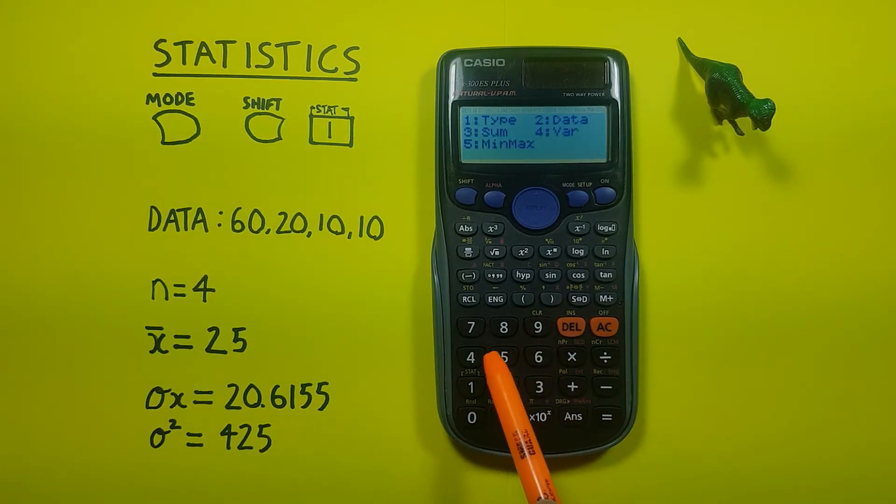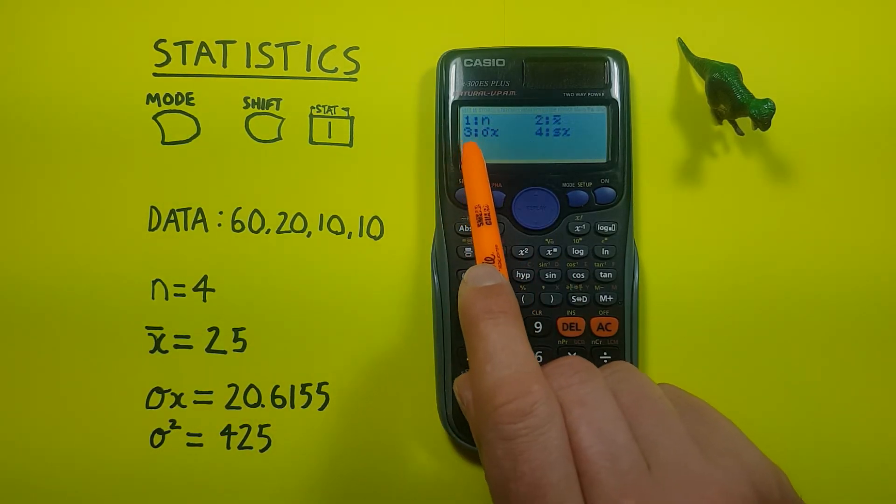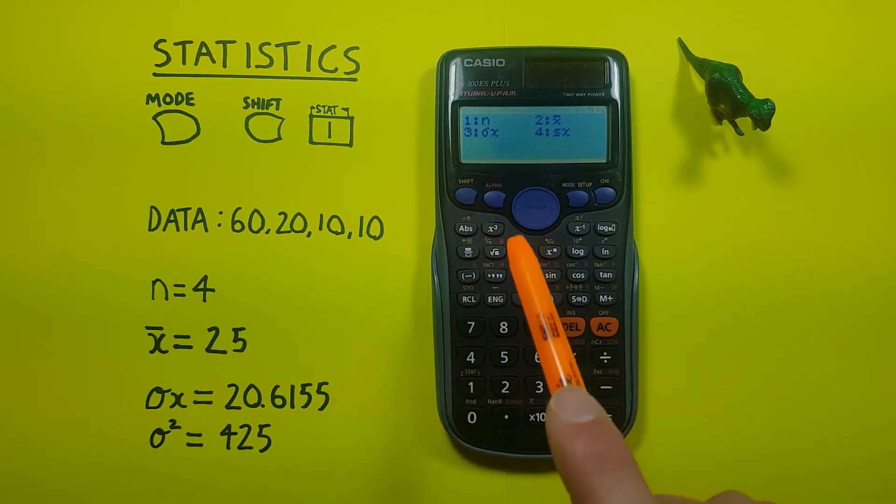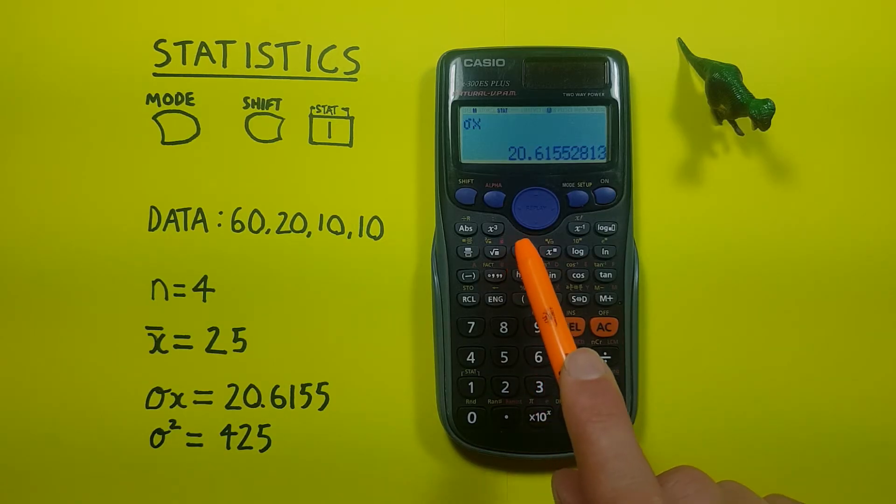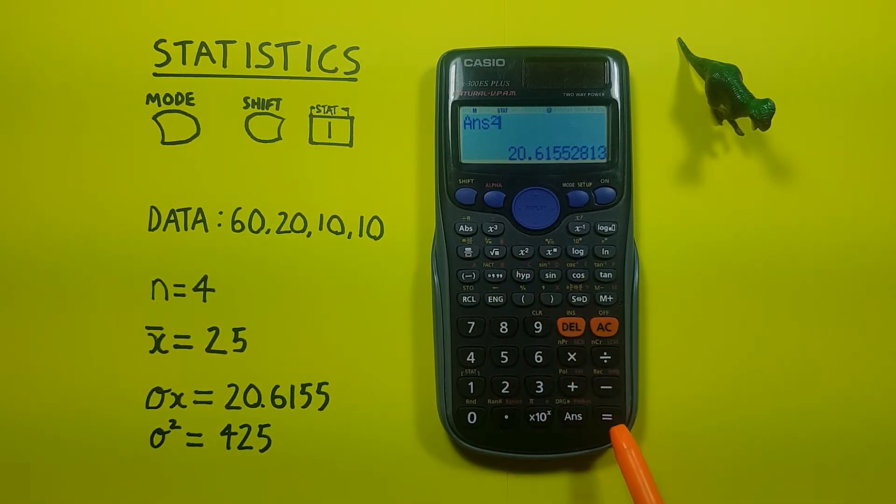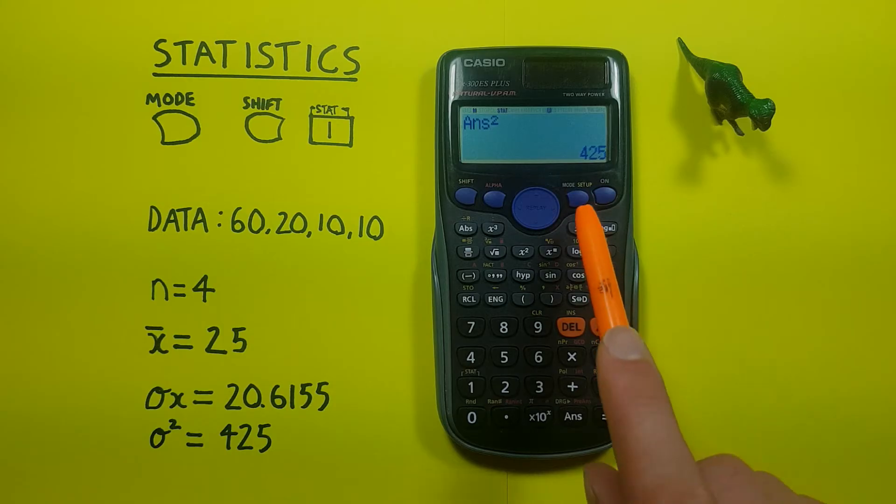We go back to stats. We can next find our population standard deviation by pressing 3, equals, there we go. And we see we get a population standard deviation of 20.6155, etc. We can also use this to calculate a population variance by squaring this number with the x squared key right there, pressing equals, and we see we get a population variance of 425.